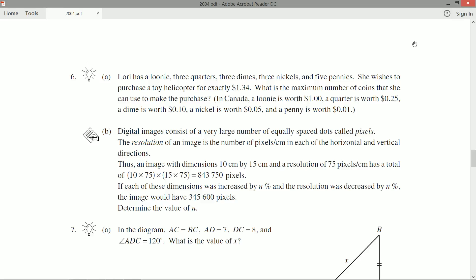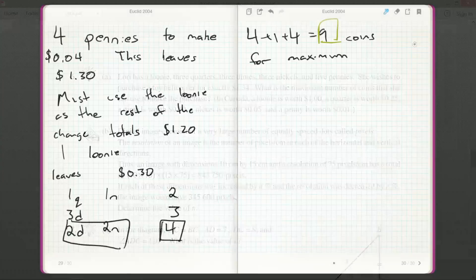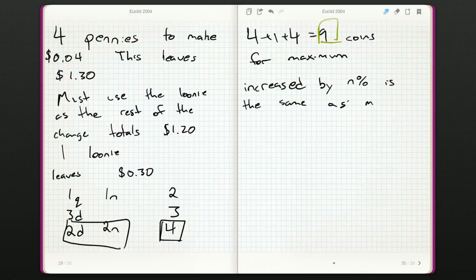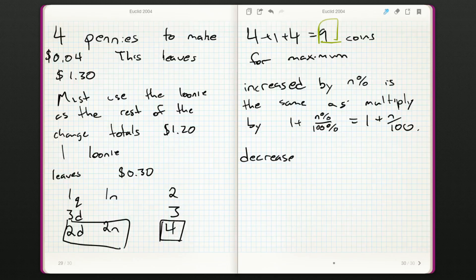Okay. So increased by n percent. I don't like really working with percents. So I'm going to make this observation. Increased by n percent is the same as multiply by 1 plus n percent over a hundred percent, which is effectively just 1 plus n over a hundred. Decreased by n percent is the same as multiplying by 1 minus n percent. This is useful information. I'm just stating it so the marker knows where these numbers are going to come from in a moment.